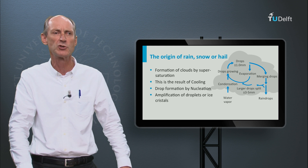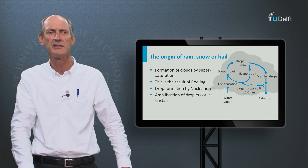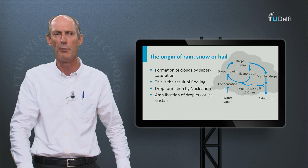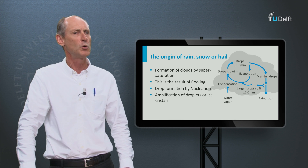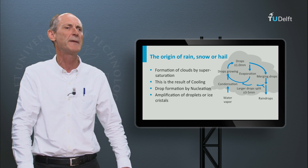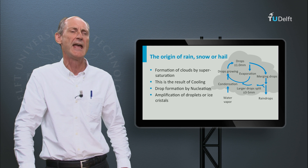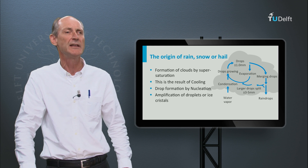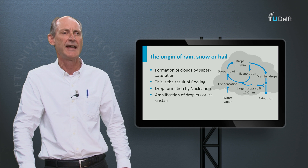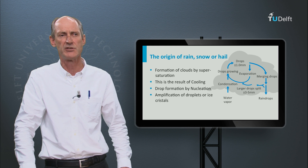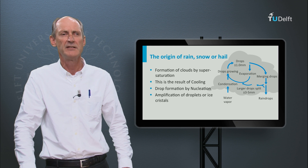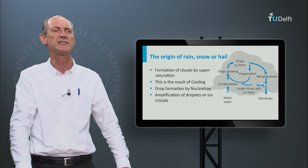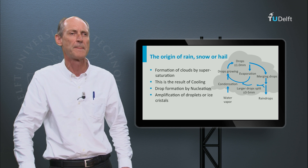Clouds are formed by supersaturation, which happens when moisture is cooled below the dew point. Cooling is caused by the lifting of air. As a volume of air is lifted, the pressure drops, and hence the temperature. The average lapse rate is 6.4 degrees Celsius per kilometer elevation.